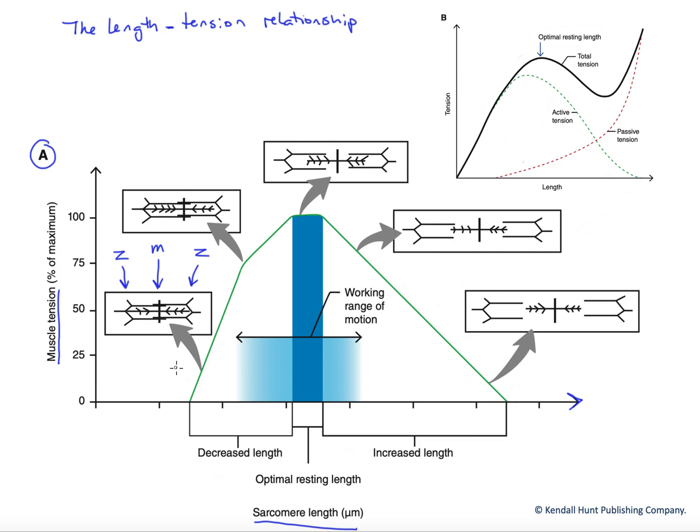And what we have at very short initial sarcomere lengths is the thick filament is jammed up against the Z-disc.